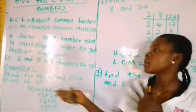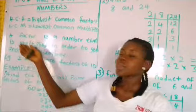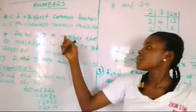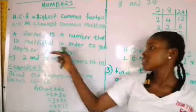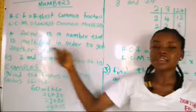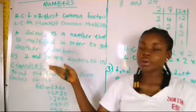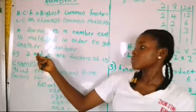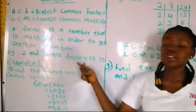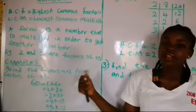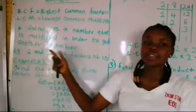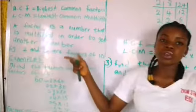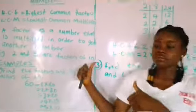Before I move forward, what is a factor? A factor is a number that is multiplied in order to get another number. For example, 2 and 5 are factors of 10 — that means 2 times 5 will give you 10.